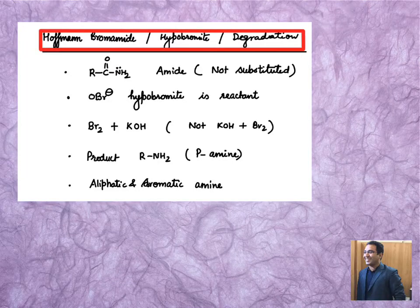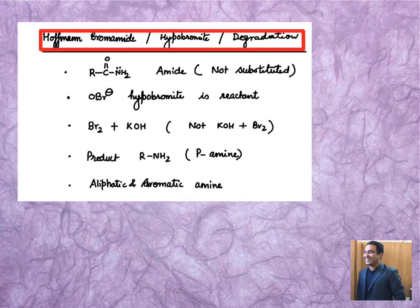Hello everyone, now we have a reaction from the amines chapter: the Hoffmann bromide, hypobromide, or Hoffmann degradation reaction. First, let's see why the name is Hoffmann bromide reaction—it's because of formation of OBr minus, and hypobromide is another name for OBr minus. Why degradation? Because if you see this reaction...